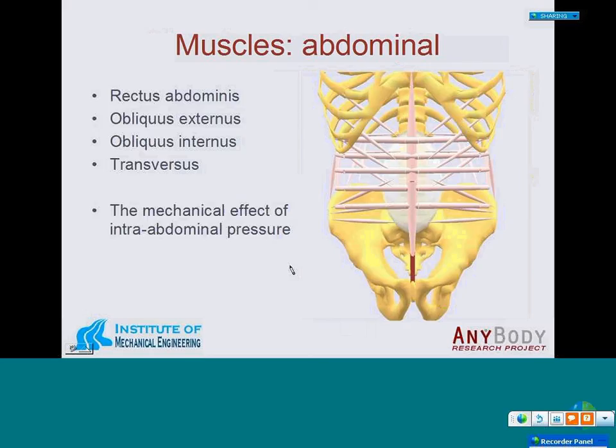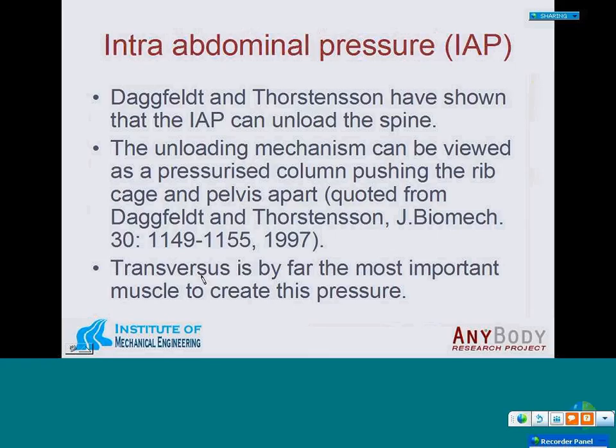I want to talk about the abdominal muscles, which are the more complicated part of the model. There are four muscles in the abdominal part: the rectus abdominis, which is a spine flexor; the obliquus externus; the obliquus internus; and the transversus. We also model the mechanical effect of intra-abdominal pressure.